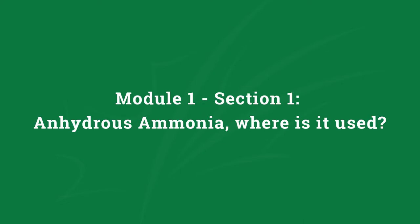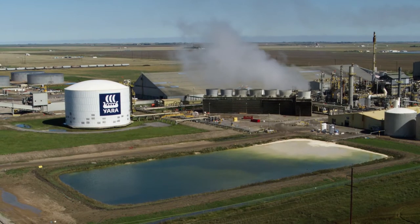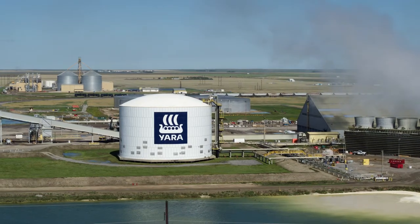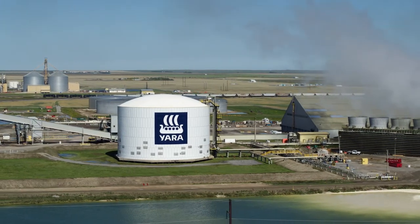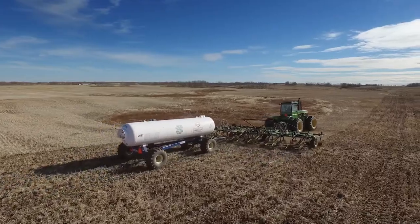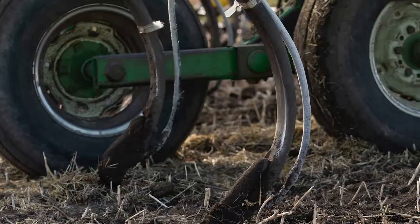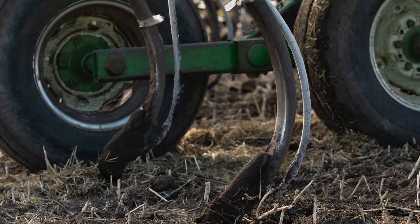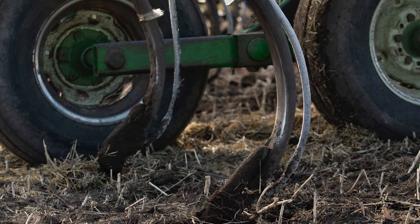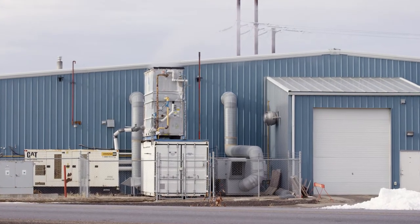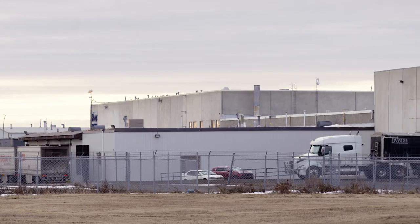Anhydrous ammonia is widely used across Canada in a range of agricultural and industrial applications. It is manufactured in large industrial facilities and has many uses. It is most commonly used as a highly effective fertilizer, primarily in Western Canada, applied in liquid form through injection into the soil using specialized farming equipment. It is also used as a refrigerant in ice rinks, meat packing plants, and cool stores.